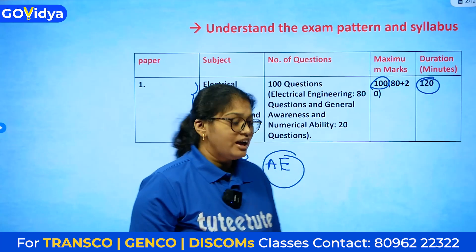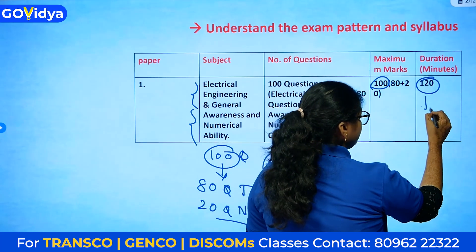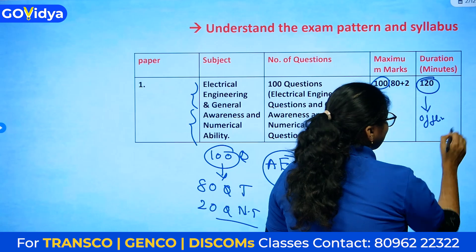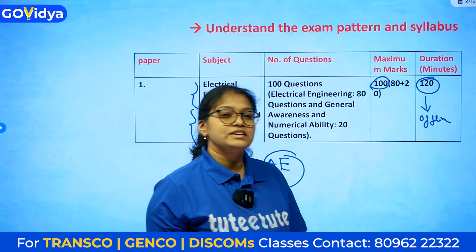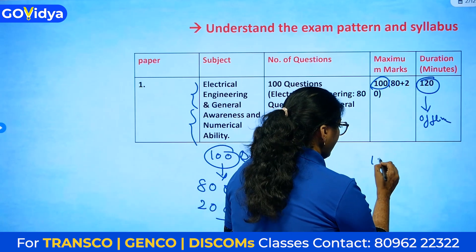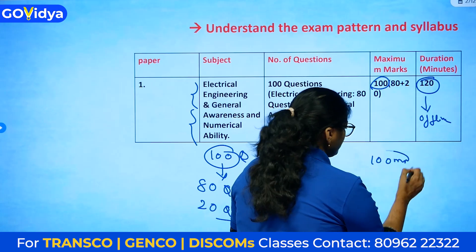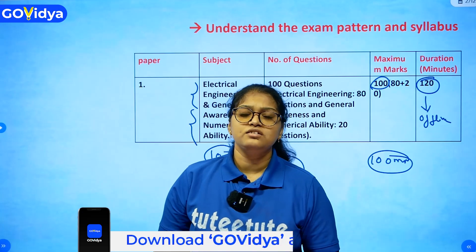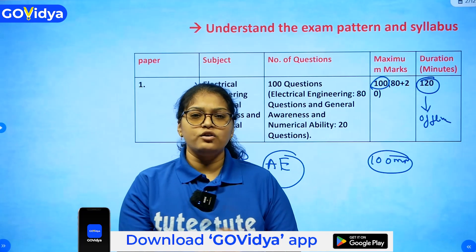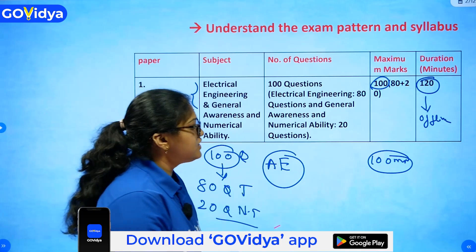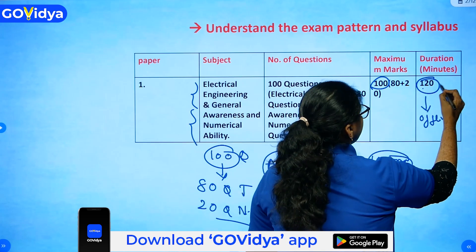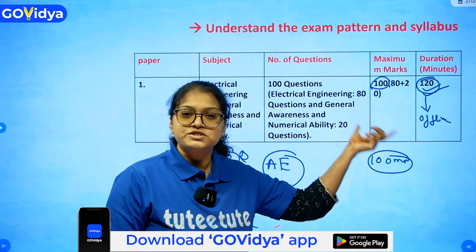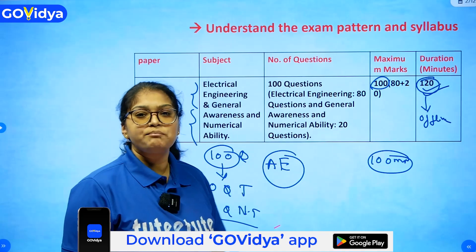The total marks is 100 and the total time is 120 minutes for the offline exam. In the last scenario, GENCO conducted the CBT and gave 100 minutes, so check the notification whether the exam is offline or online. For offline it is 120 minutes — this is the exam pattern you must know before starting.